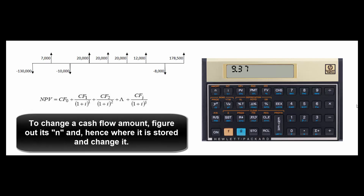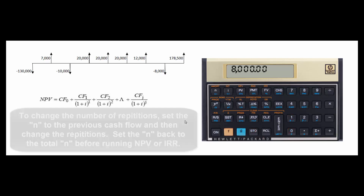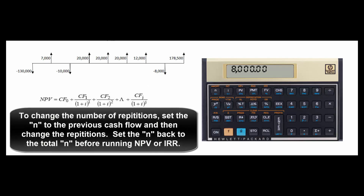If you want to change one of the cash flows, simply recall whichever register it's in — like Recall 1. If you wanted to change that to $8,000, just enter 8,000 and store it in register one. If you need to change the number of repetitions for a cash flow, first set N for the previous cash flow, then hit G-NJ for the correct number of repetitions.